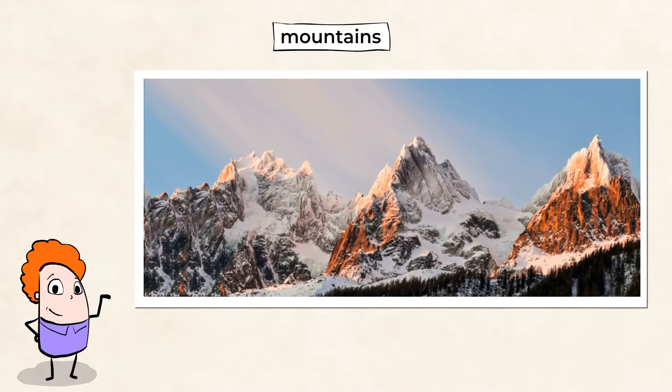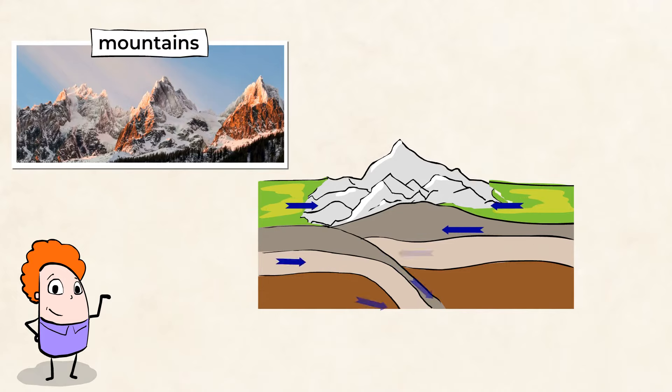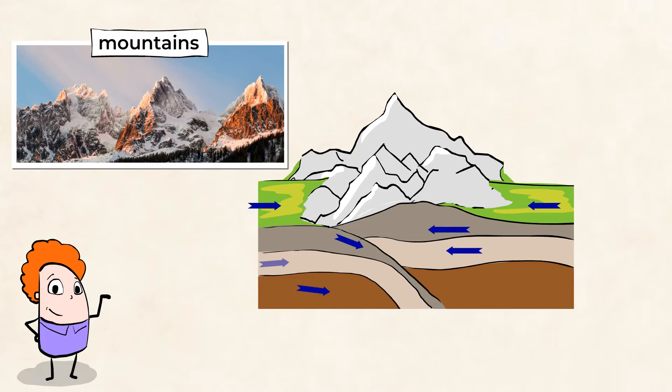And this takes us to our first landform, mountains. These are mountains, and they have a big impact on the landscape. As one tectonic plate shifts, it can bump into another plate, forcing it upward. And this is how mountains are formed.